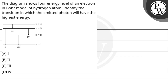Hello. Let's start with the question. The diagram shows 4 energy levels of an electron — 1, 2, 3, 4 — in the Bohr model of the hydrogen atom. Identify the transition in which the emitted photon will have the highest energy.